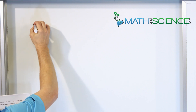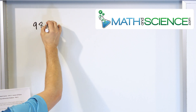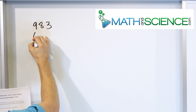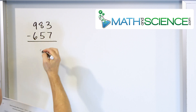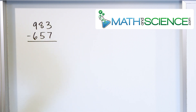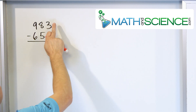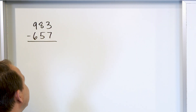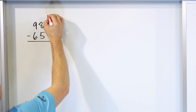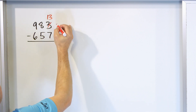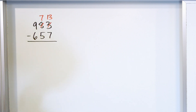Let's say that we have 983 and we want to subtract from that 657. We want to get the answer and then after we get the answer we want to check it. What is 3 minus 7? We can't really do that because 3 is not big enough, so we have to make it 13. We have to borrow and make the 8 into a 7.